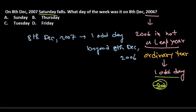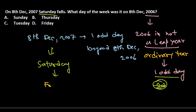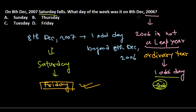So 8th December 2006 is one odd day before 8th December 2007. The day on 8th December 2007 is Saturday, so one day before Saturday is Friday. Therefore, 8th December 2006 falls on a Friday.